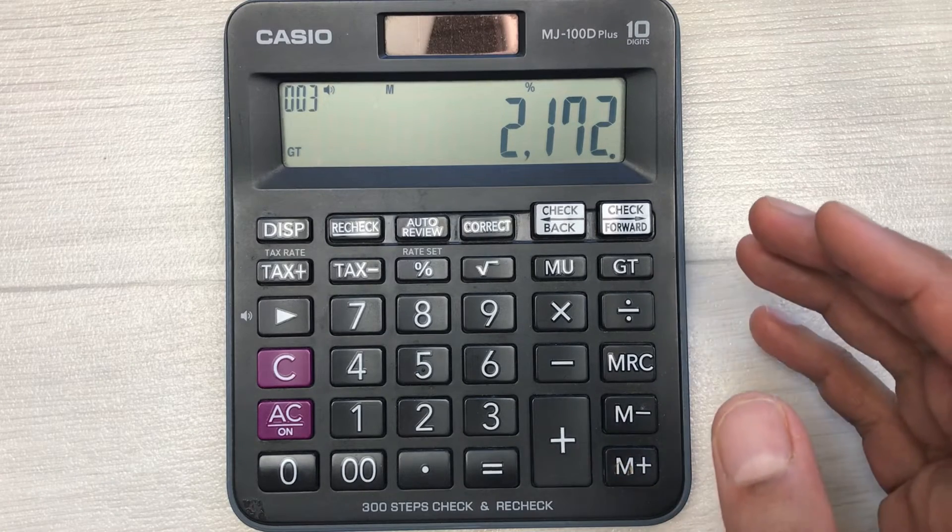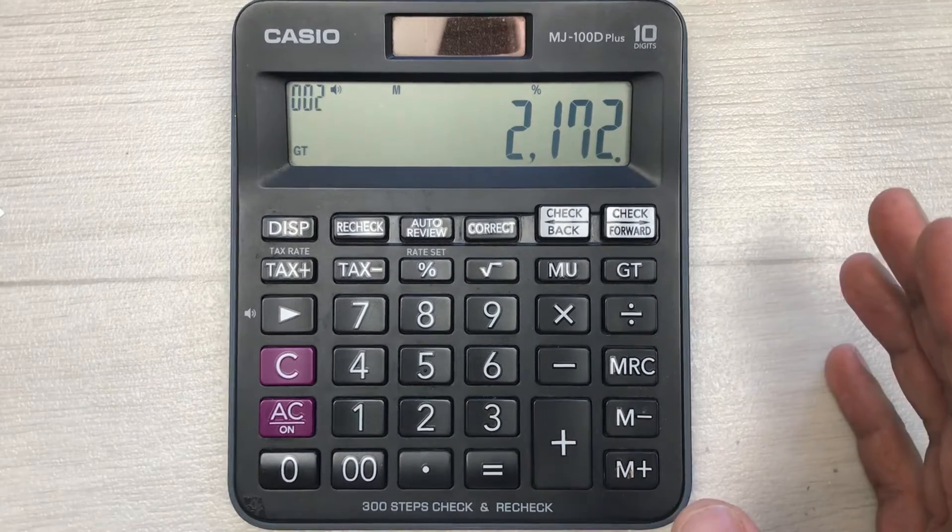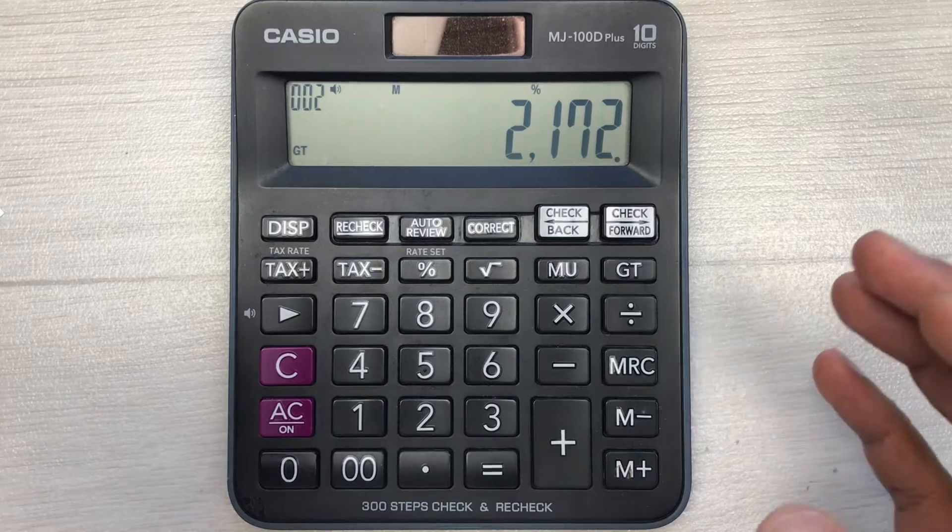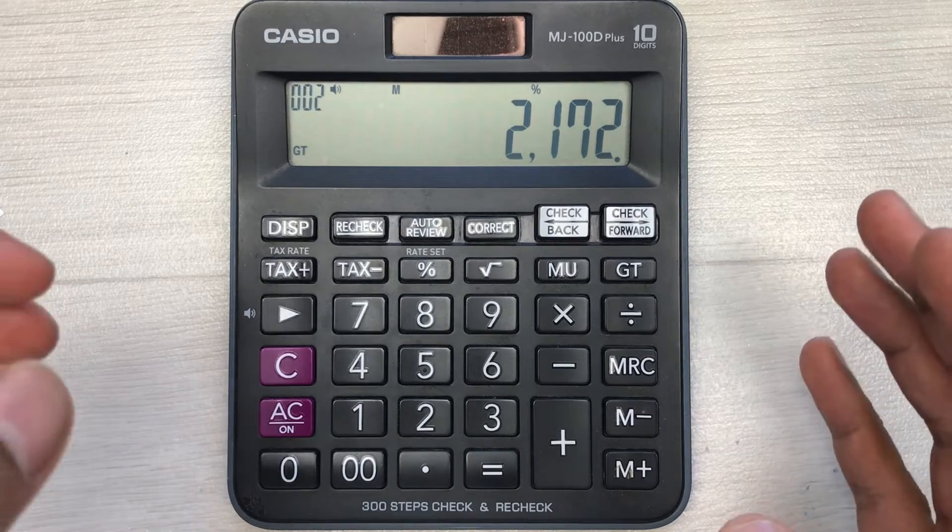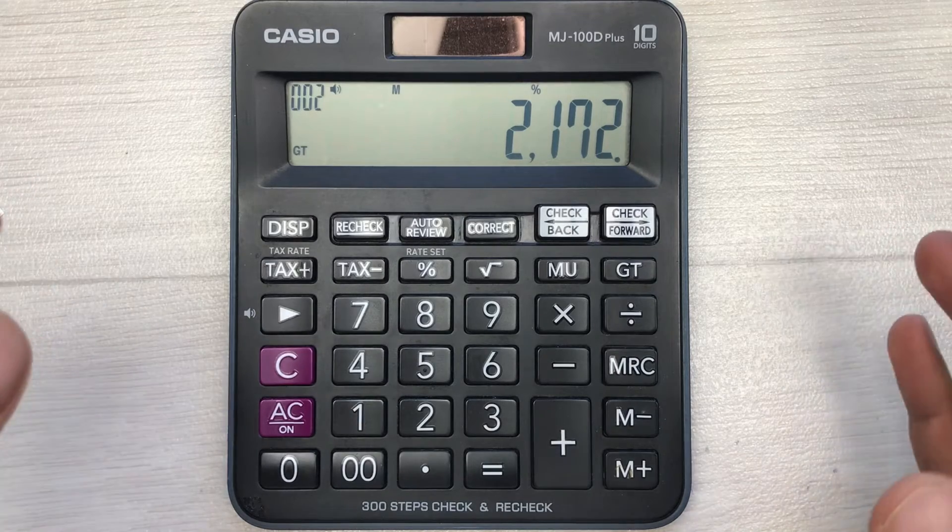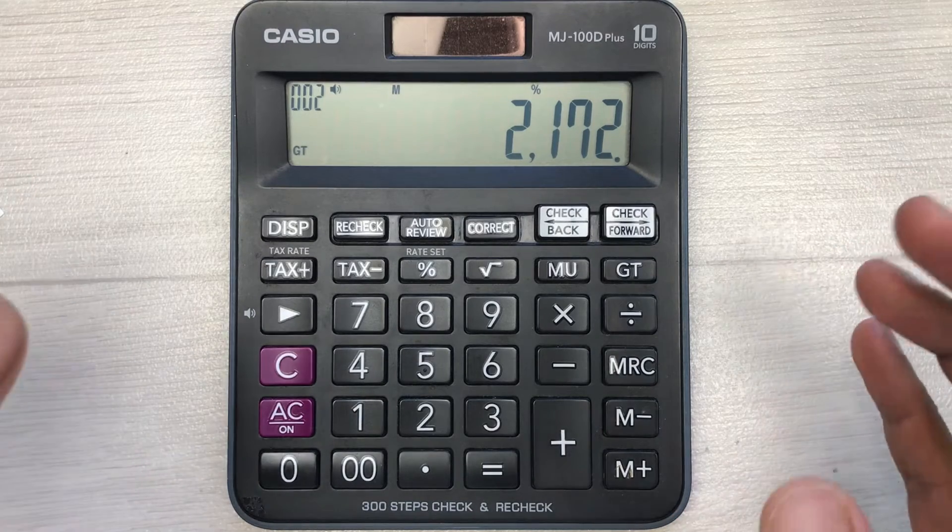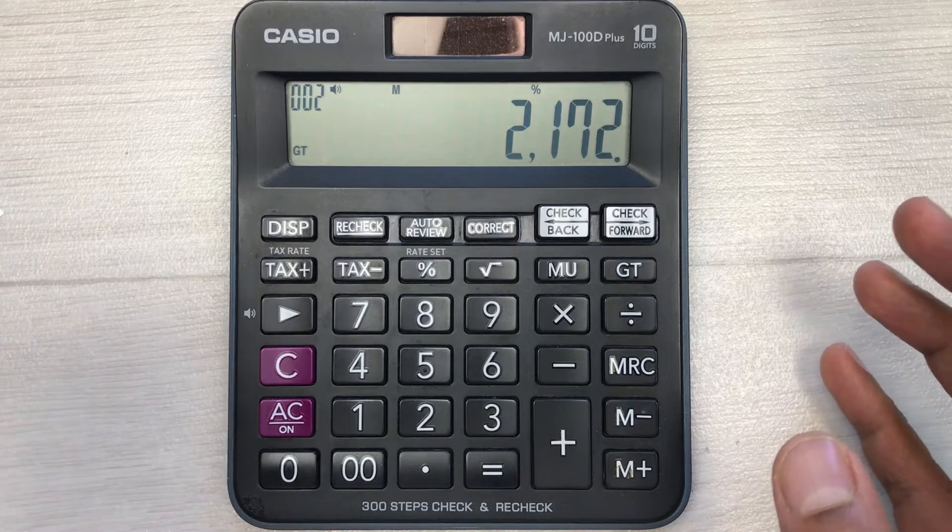So guys, why I multiply it with 40%? It's because the total percentage is 100, and we want 60% discount. So 100 minus 60 is equal to 40. That is why I directly multiply it with 40% to get our final answer.